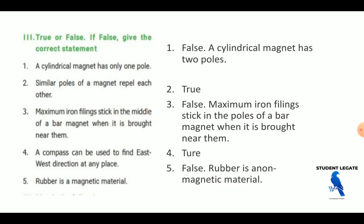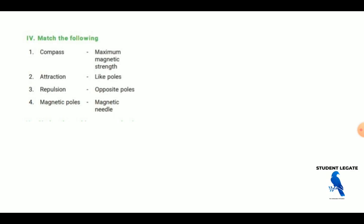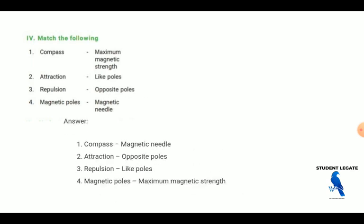That is the pole. Compass, magnetic needle. A compass is a magnetic needle. Attraction, opposite poles. Repels, like poles. Magnetic, the maximum magnetic strength.